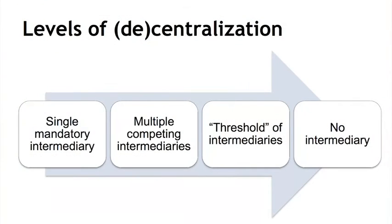Let's put what we've seen on a spectrum. On the most centralized end is a single mandatory intermediary. We also just looked at multiple competing intermediaries. There's one more intermediate step — a threshold of intermediaries — which we'll see near the end. And what we started out seeing with smart property is complete disintermediation: no intermediary at all. These are not completely distinct categories, but it's useful conceptually to think of them that way.